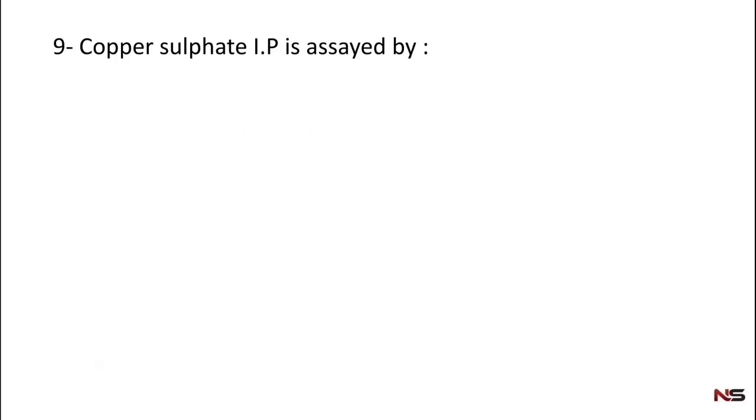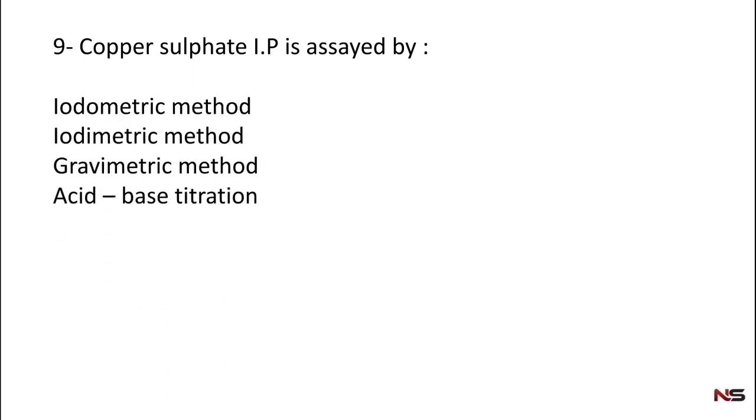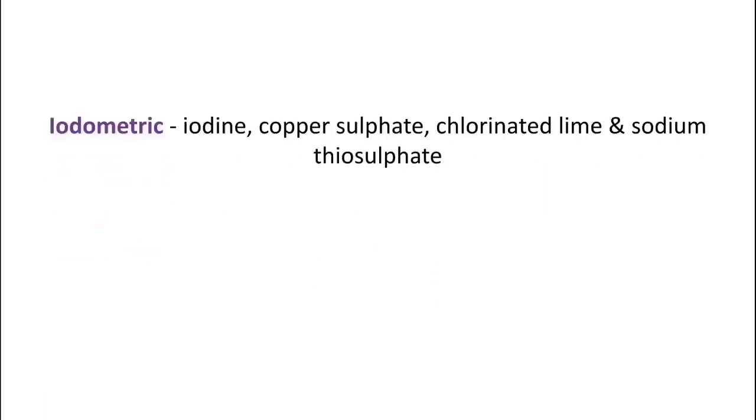Question number nine: copper sulfate IP is assayed by - iodometric method, iodimetric method, gravimetric method, acid-base titration. Write down your answers. The correct answer is iodometric method. Copper sulfate IP is assayed by iodometric method.